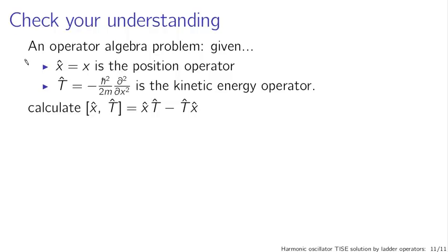To check your understanding, here is an operator algebra problem. Given that x̂ is the position operator and T̂ is the kinetic energy operator — essentially p̂²/2m — calculate the commutator [x̂, T̂]. The tip is to be sure to include a test function when you expand out these terms, and when you take second derivatives, do it as a sequence of two steps rather than trying to take the second derivative in one step. You may have to apply the product rule.